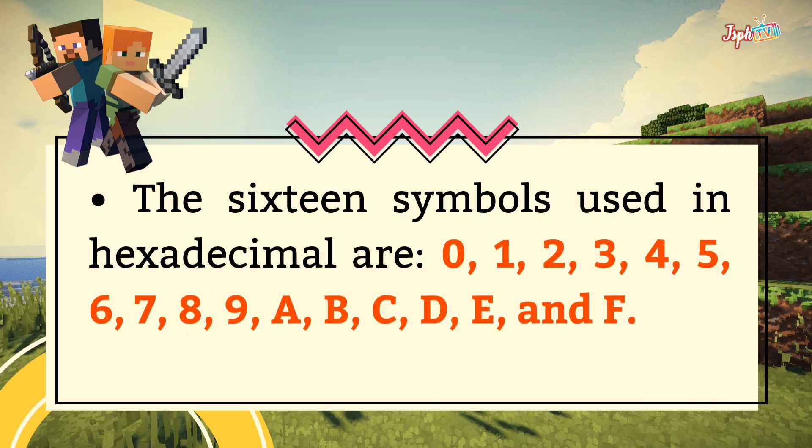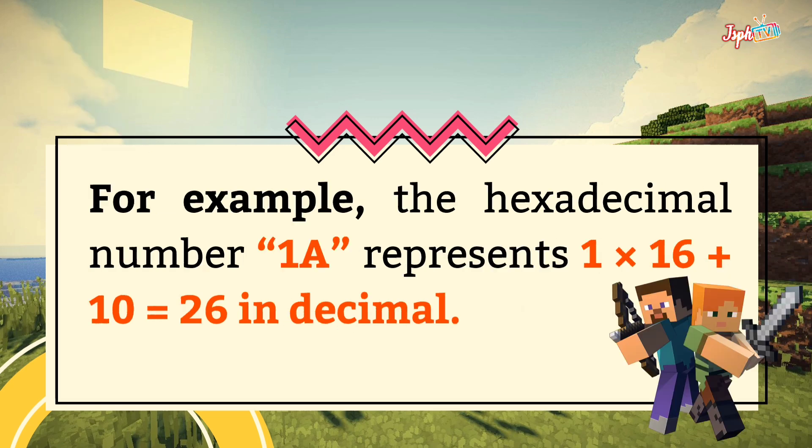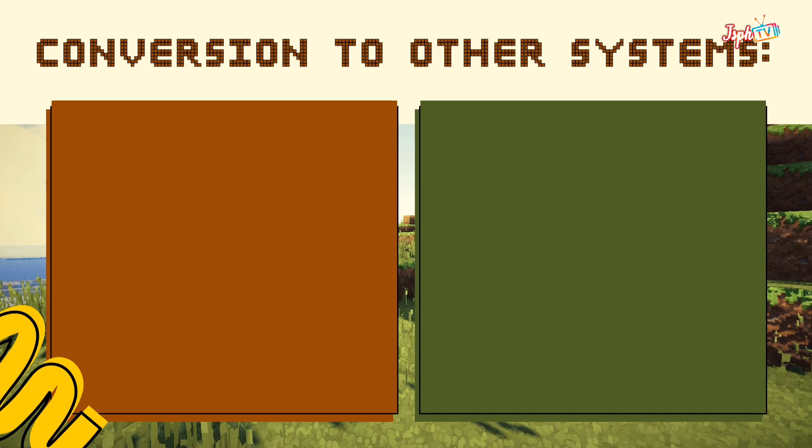The 16 symbols used in hexadecimal are 0, 1, 2, 3, 4, 5, 6, 7, 8, 9, A, B, C, D, E, and F. For example, the hexadecimal number 1A represents 1 × 16 + 10, which equals 26 in decimal.